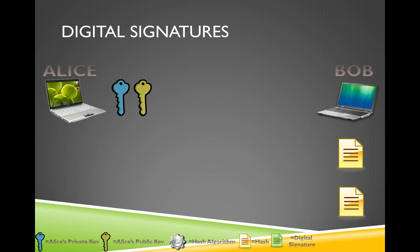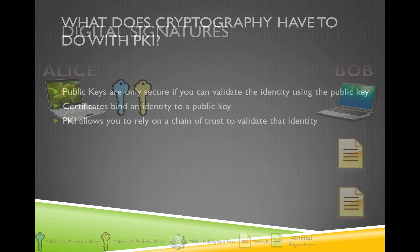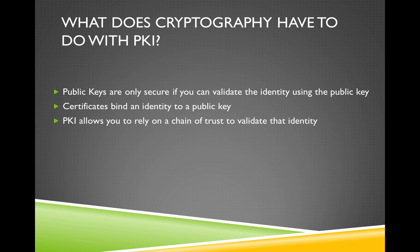So he can believe two things: one, that Alice sent the email, and two, that it was not modified in transit. That's the reason for using digital signatures — for non-repudiation and also to ensure that the data has not been modified between when it was created and when the person is now accessing it.